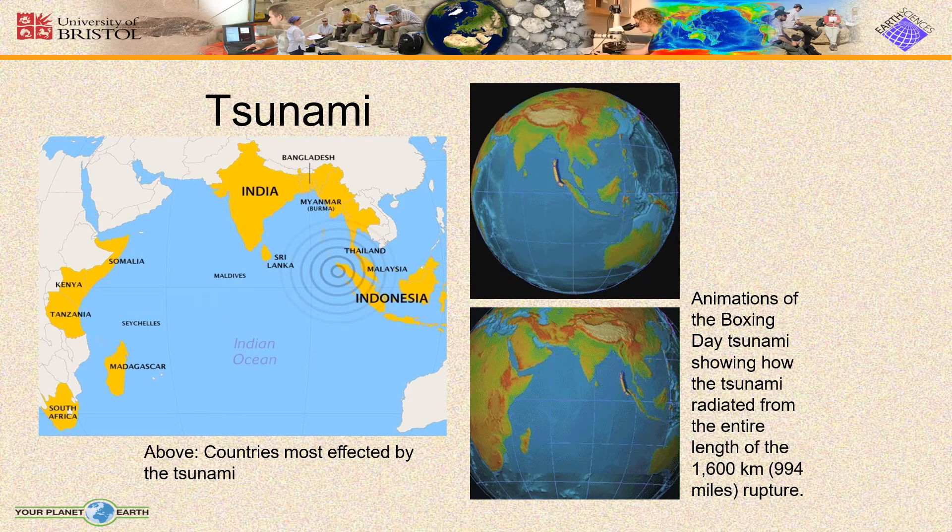Here in this slide you can see the tsunami which came between India, Sri Lanka, Thailand, Malaysia, and Indonesia. This was the portion affected by the tsunami.